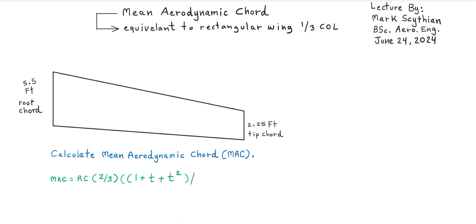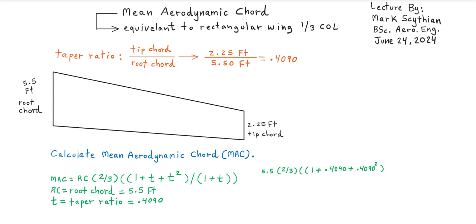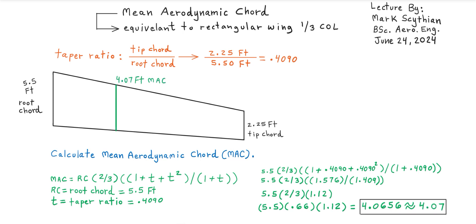If you're working with a swept back or a tapered wing or any other type of wing planform which is not rectangular, finding that equivalency to one-third of the MAC of a rectangular wing applied to non-rectangular wings is the premise of mean aerodynamic chord.